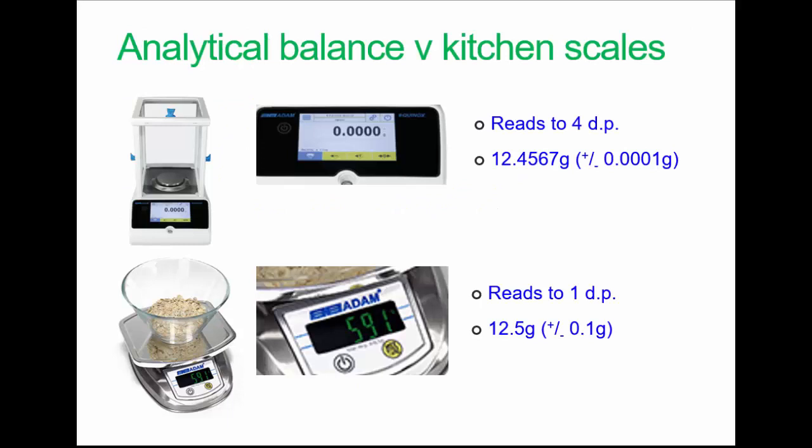In the food lab, we have analytical balances which read to four decimal places and food kitchen scales which read to one decimal place. We can get a weight on the analytical balance to six significant figures, whereas on the kitchen scales we're going to get three significant figures. You couldn't report the weight you record from the kitchen scales as 12.5000, for example. It could only be 12.5, plus or minus 0.1, compared to a much narrower margin for the analytical balance.